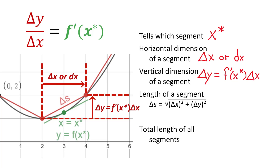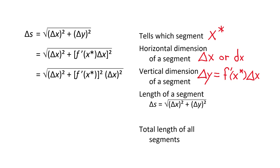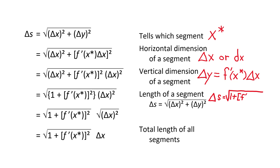Now we can use that to get the length of a segment in terms of X only, with no Ys. We go back to delta S equals the square root of delta X squared plus delta Y squared, and replace delta Y with f prime of X star times delta X. We can factor out delta X squared and pull it out of the radical. This gives the length of one finite segment. If we are considering the limit as delta X approaches zero, then we use DX instead of delta X. We can also drop the star from the X. This gives us DS equals the square root of 1 plus f prime of X squared, with DX outside the radical.